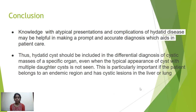Knowledge of atypical presentations and complications of hydatid disease may be helpful in making a prompt and accurate diagnosis, which aids in patient care. Thus, hydatid cysts should be included in the differential diagnosis of cystic masses of any specific organ even when the typical appearance of cysts with multiple daughter cysts is not seen. This is particularly important if the patient belongs to an endemic region and has cystic lesions in the liver or bone.